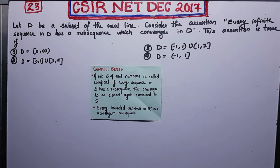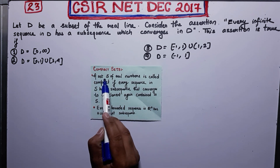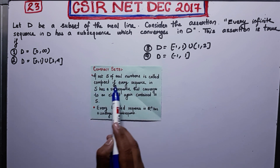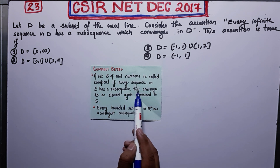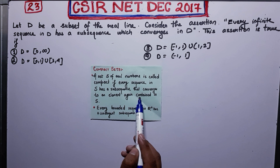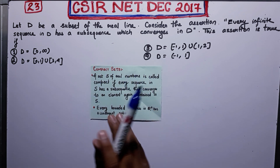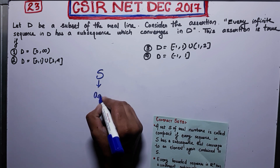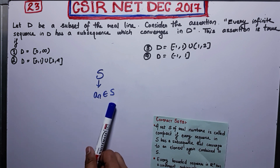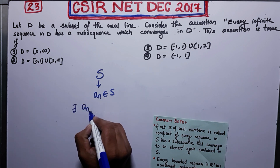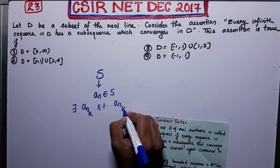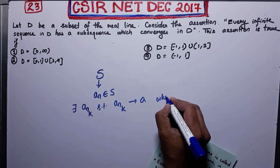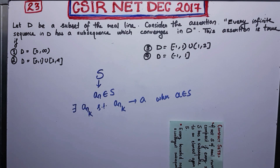First, I will remind you of this assertion using the sequential definition of a compact set. A set S of real numbers is called compact if and only if every sequence in S has a subsequence that converges to an element again contained in S. So for any sequence inside S, there must exist a subsequence a_{n_k} such that a_{n_k} converges to some a, where a must belong to S. This is the definition for compactness.